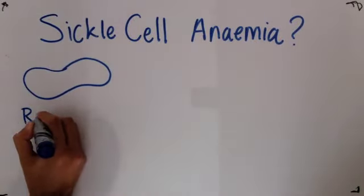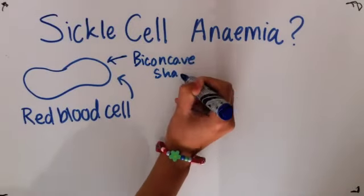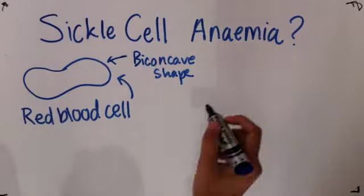Instead of the donut shape without the hole, which we call the biconcave shape, it has a sickle shape instead, like a crescent moon.